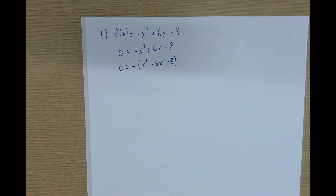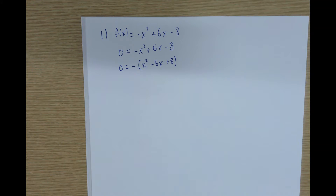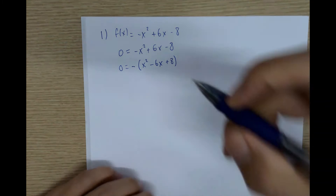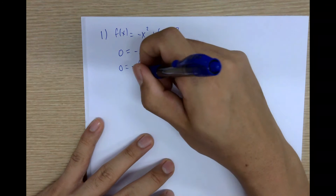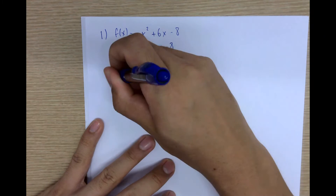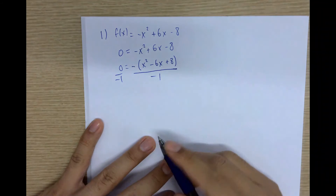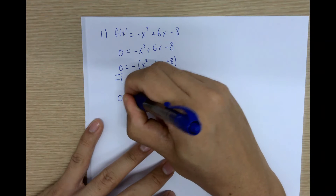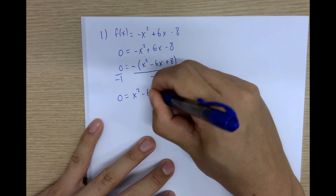When you take a negative from a positive number, it becomes negative. When you take a negative from a negative number, it becomes positive. The second new step is to divide everything by negative 1 to get rid of the negative — it cancels out, and we get 0 equals x squared minus 6x plus 8.